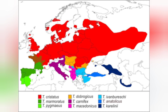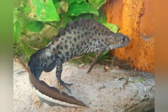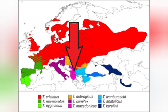We then come to Triturus macedonicus, the Macedonian crested newt, which has a range extending from northern Greece up through Albania, western Macedonia, Kosovo, northern Serbia, and eastern parts of Bosnia. Triturus macedonicus was originally described as part of the Triturus karelinii group, later thought to be part of the Triturus carnifex species, and it wasn't until 2007 that it was elevated to a species rank of its own.